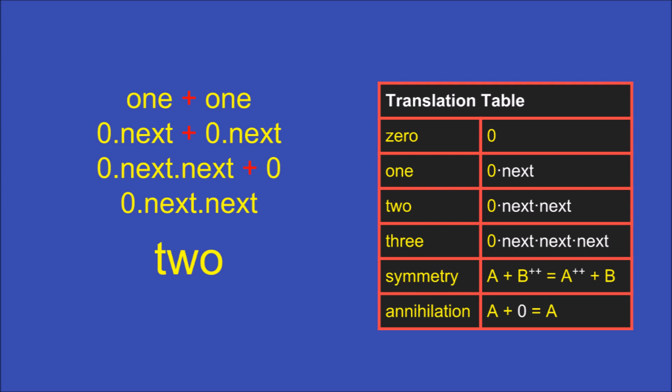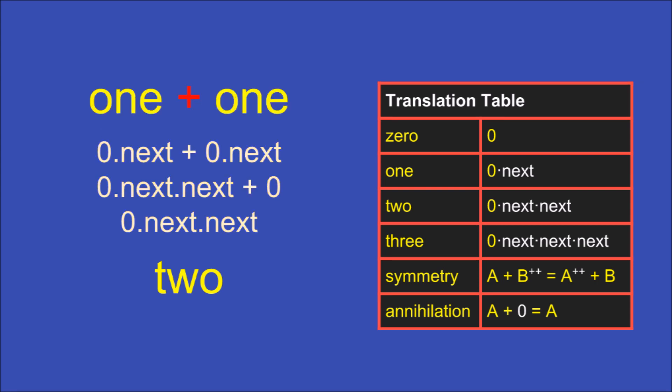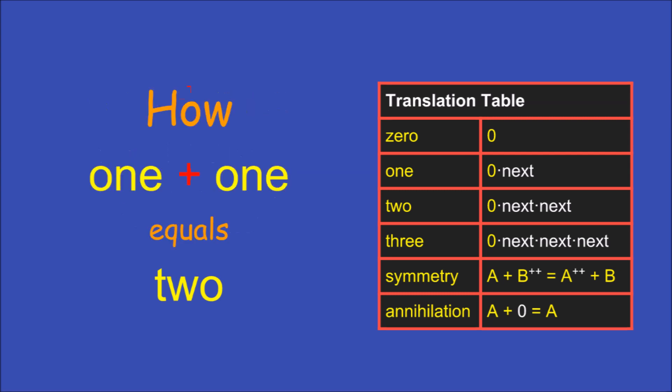So there you have it, using the set of rules in the table, symmetry, annihilation, and labels, we have a way to show how 1 plus 1 equals 2.